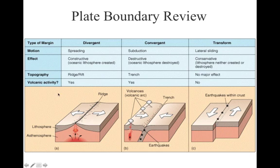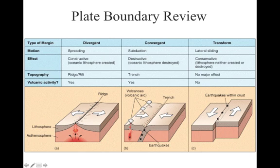So let's review the three types and what happens at each. First we have divergent — it's a spreading motion, and it is constructive, meaning lithosphere is being created. We're going to get a ridge, or if it's on land, a rift valley, and oftentimes we'll have volcanic activity as magma comes out between the two plates. Then we have transform, which is a sliding motion. It's called conservative, meaning lithosphere is not made or destroyed. Nothing really forms topographically — no mountains — and it doesn't usually have volcanic activity, although we do have earthquakes.